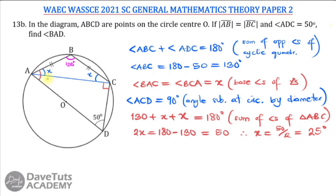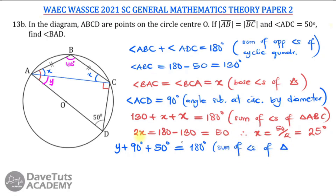I can also find angle y from triangle ACD. y plus 90 plus 50 equals 180 degrees, because those are the sum of angles of triangle ACD. So y equals 180 minus the sum of 90 and 50, which is 140, giving y equals 40 degrees.